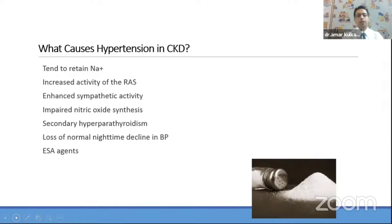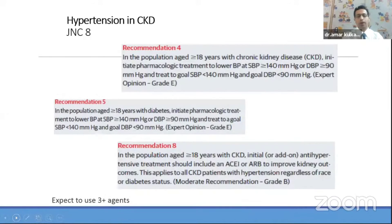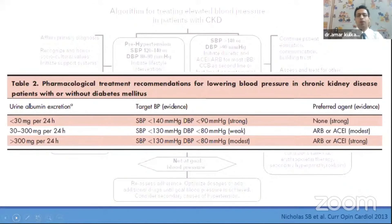Mechanisms of hypertension in CKD include sodium retention, increased renin-angiotensin activity, enhanced sympathetic activity, impaired nitric oxide synthesis — a major vasodilator — and secondary hyperparathyroidism. JNC 8 recommends treating when blood pressure is greater than or equal to 140/90 mmHg with antihypertensive medications to keep values below 140/90. When proteinuria is higher, we need to target further to 130/80.